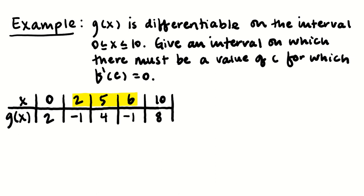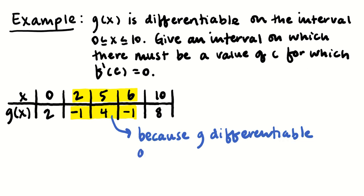And if we look here from 2 to 6, g of x goes from negative 1 to 4 to negative 1. So there must be, let's point it down here.